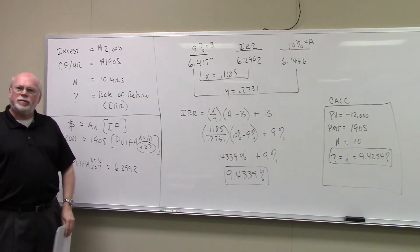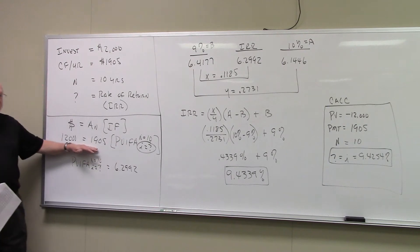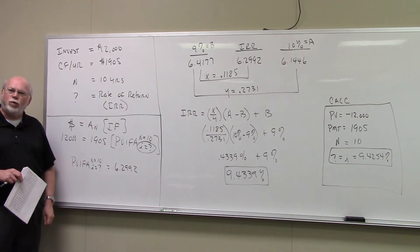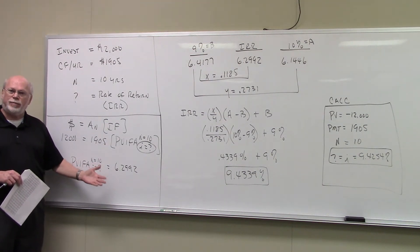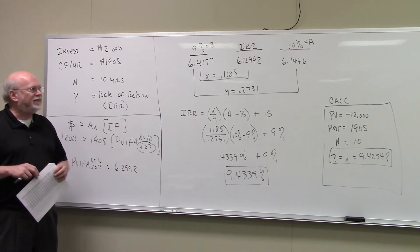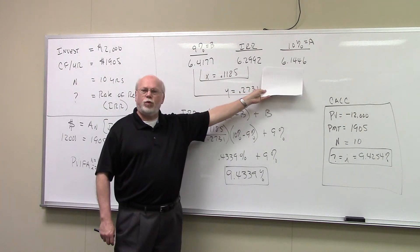Now, the question becomes, is the rate of return on this investment exactly 9%? Well, the answer is no because when we did this math right here, this didn't turn out to be 6.4177. Therefore, the rate of return is not exactly 9%. And if you look up your PVIFA at 10 and 10%, you find 6.1446.